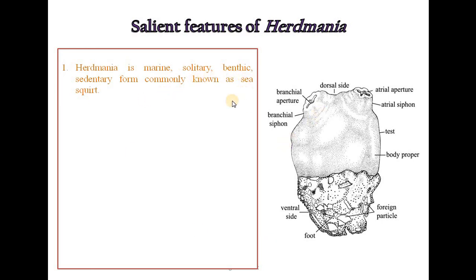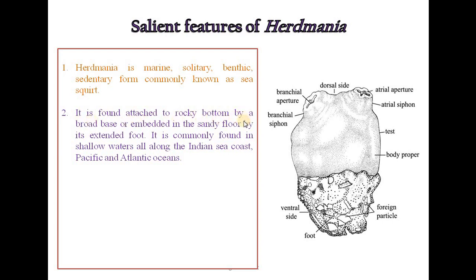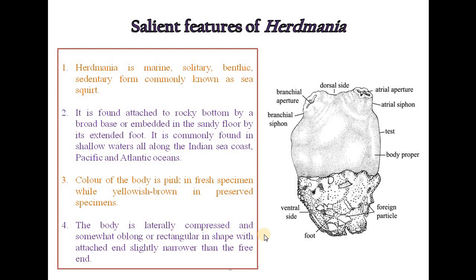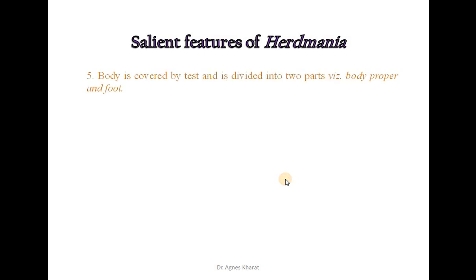Herdmania is a marine, solitary, benthic, sedentary form commonly known as sea squirt. It is found attached to the rocky bottom by a broad base or embedded in the sandy floor by its extended foot. It is commonly found in shallow waters all along the Indian sea coast, Pacific and Atlantic Oceans. Color of the body is pink in fresh specimens while yellowish brown in preserved specimens. The body is laterally compressed and somewhat oblong or rectangular in shape, with the attached end slightly narrower than the free end. In the diagrammatic representation, we can see the foot part of the body, the body proper, and two apertures: the brachial aperture and the atrial aperture. Body is covered by a test and is divided into body proper and foot.